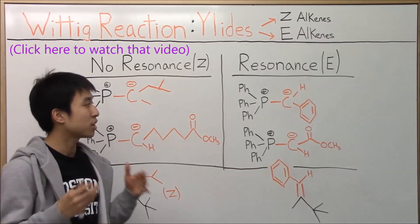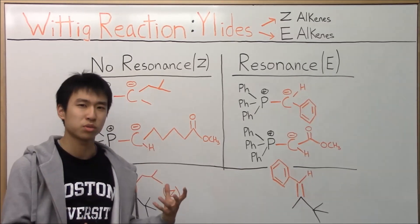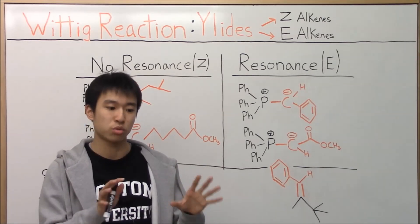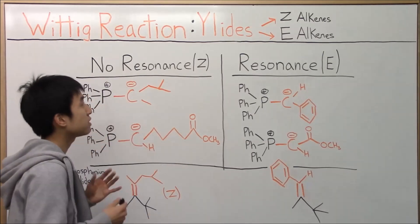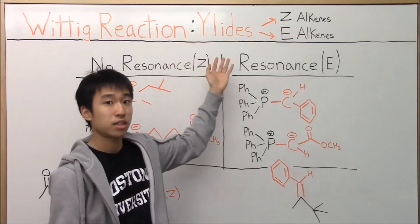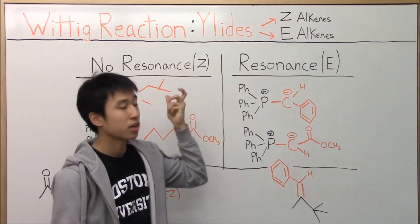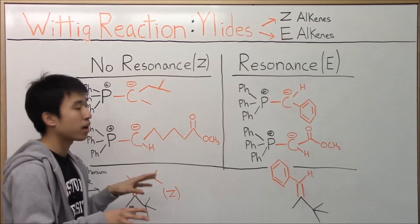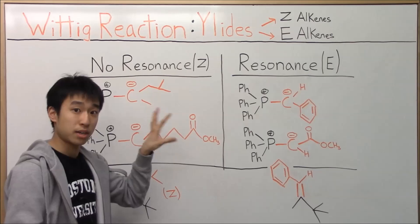Alright, so chances are if you're here you guys already watched that video and you are probably confused why I got a Z-alkene and an E-alkene and two different products in that video, right? Well the reason is because depending on your ylid that you use in the Wittig reaction, you're either going to get a Z-alkene or an E-alkene. And the important factor is whether or not the ylid has some sort of stabilizing resonance in it.